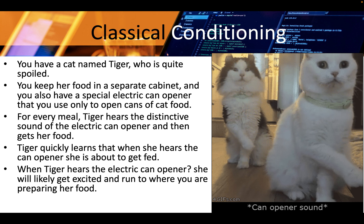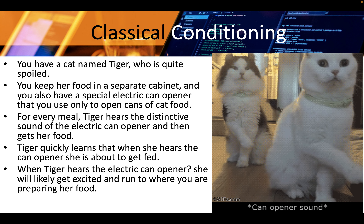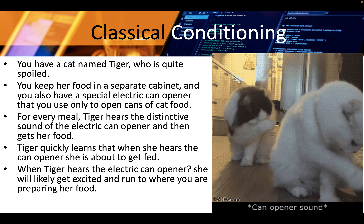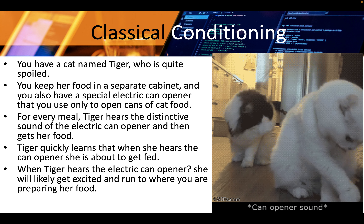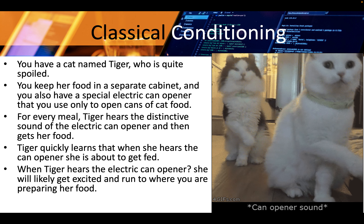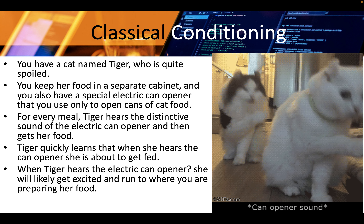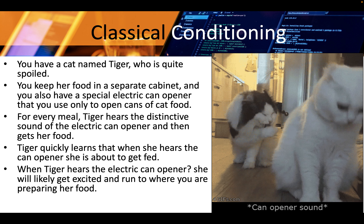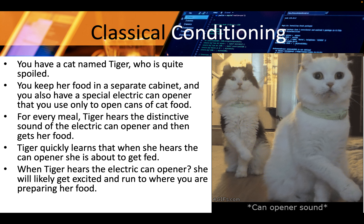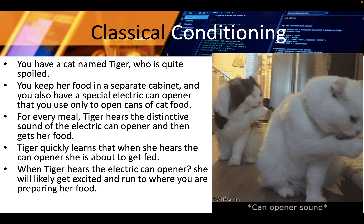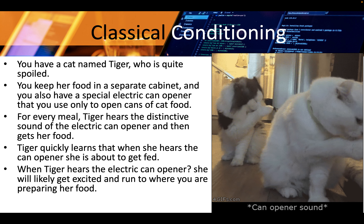You have a cat named Tiger who is quite spoiled. You keep her food in a separate cabinet and you also have a special electric can opener that you use only to open cans of cat food. For every meal, Tiger hears the distinctive sound of the electric can opener and then gets her food. Tiger quickly learns that when she hears the can opener, she is about to get food, and will likely get excited and run to where you are preparing the food.